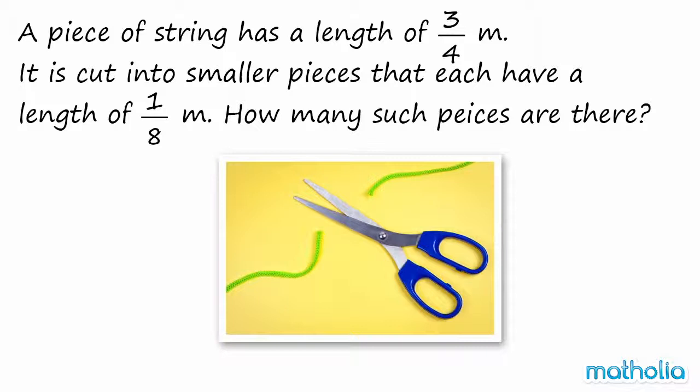A piece of string has a length of 3 quarters of a meter. It is cut into smaller pieces that each have a length of 1 eighth of a meter. How many such pieces are there?